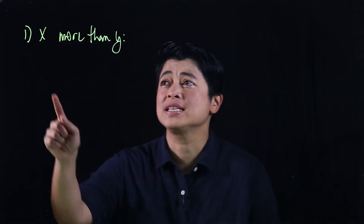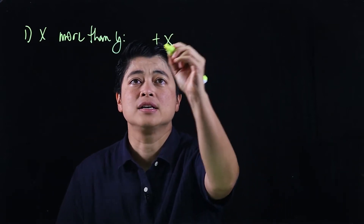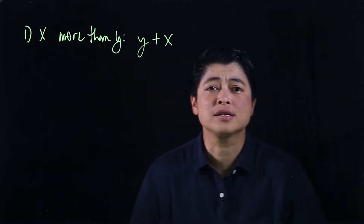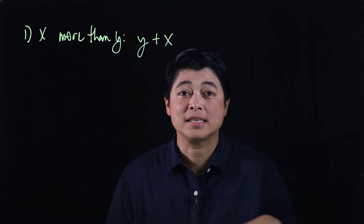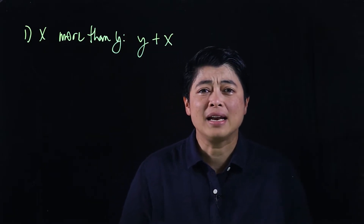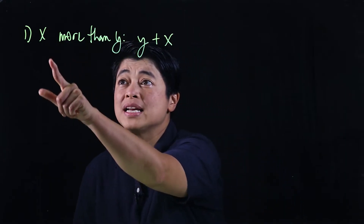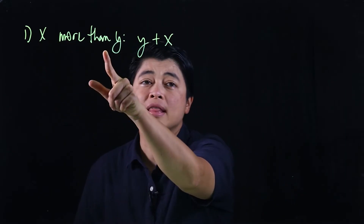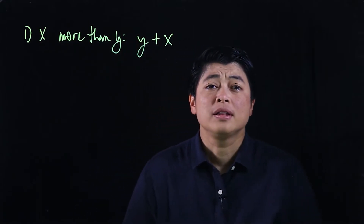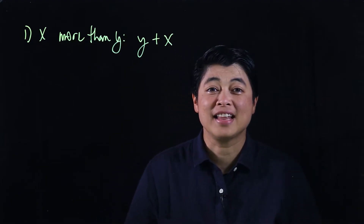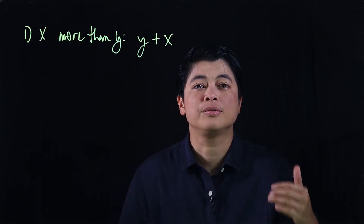We need to be consistent. When it says 'x more than y,' that means we're adding x to y. Most of us will probably write this as x plus y, which is equivalent, but in reality we're not helping our kids when we write it that way. The reason we need to be consistent is that when it's 'less than,' you can't switch the order — so it's best to write it as you read it.